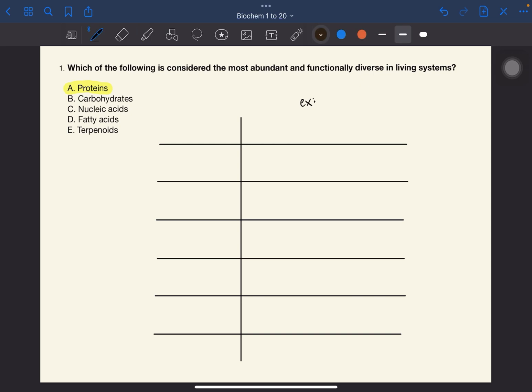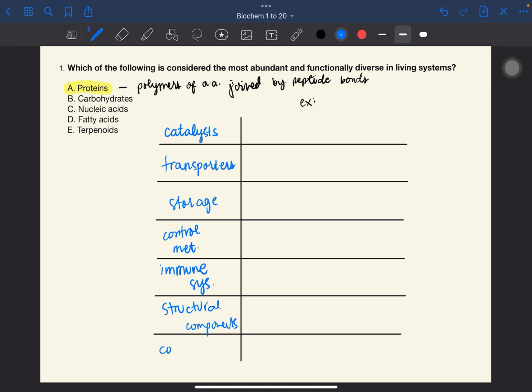If you recall, proteins are polymers of amino acids that are joined together by peptide bonds. Proteins can be catalysts, can be transporters, storage, control metabolism. They can help in the immune system. They can be structural components and they can be contractile proteins.